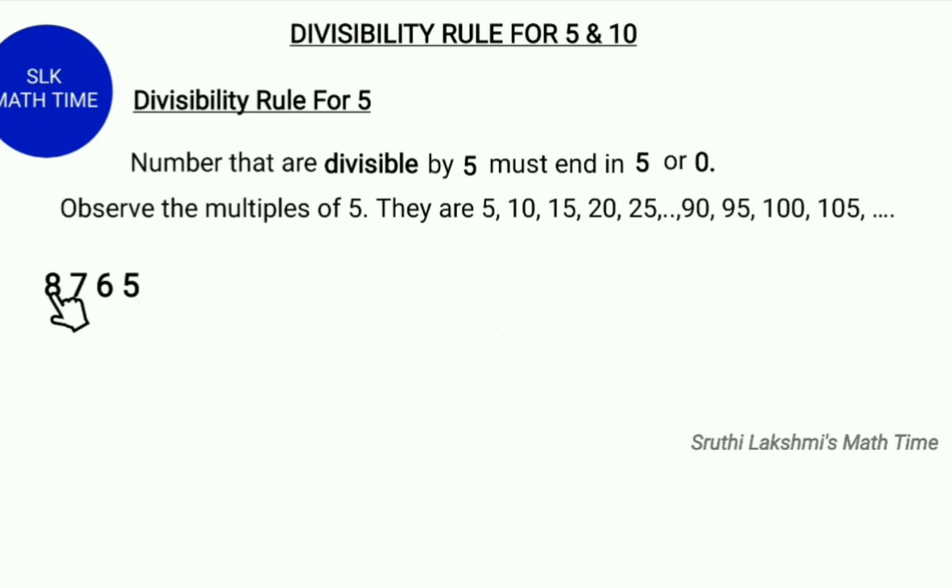Here, 8,765 ends with a 5, so it is divisible by 5.